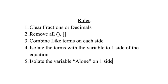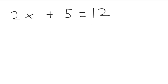We'll go over all the rules on how they apply to solving for x. Let's start off with this example: we have 2x plus 5 equals 12. The first rule doesn't matter because we don't have any fractions or decimals. The second rule doesn't matter — there are no parentheses or brackets. The third rule does not matter in this case because we don't have any like terms.